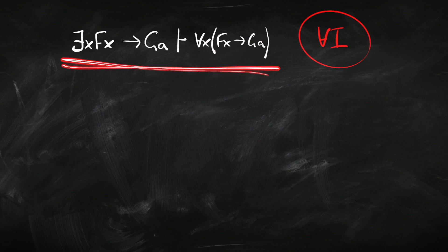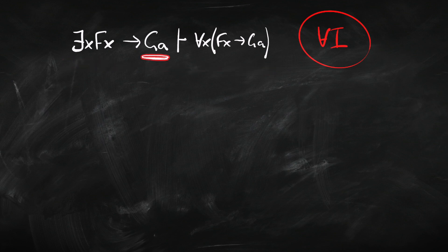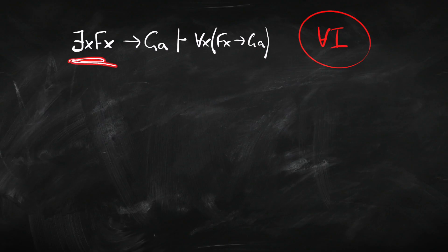Let's look at an example. Suppose we want to prove this: from 'if something is F then A is G' to 'everything is such that if it's F then A is G.' So we're going from an existential to a universal. We should be able to prove this because, if you think about prenex normal form, this will turn into this. If you don't know what I mean by prenex normal form, go back to the video on first order logic.